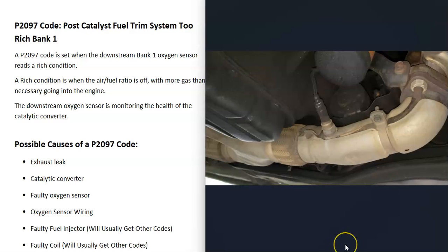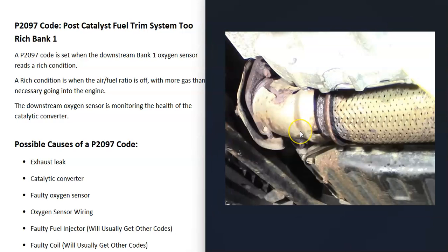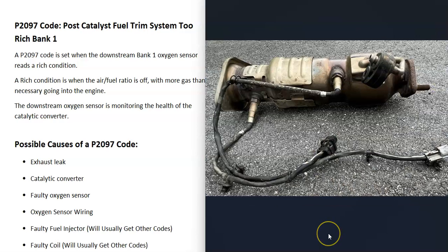Bank one sensor two is located right here. Some possible causes of a P2097 code: the first is an exhaust leak, because if outside air is getting into the exhaust it could throw the sensors off. Be on the lookout for holes, physical damage, or old and blown-out gaskets where the exhaust bolts together — all of these can cause exhaust leaks.